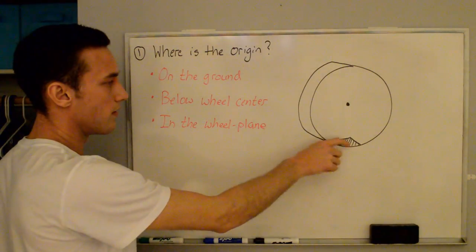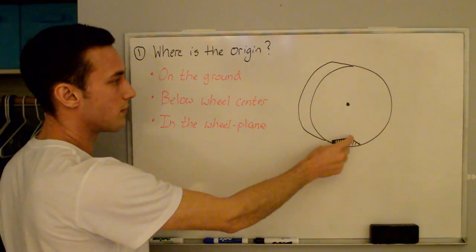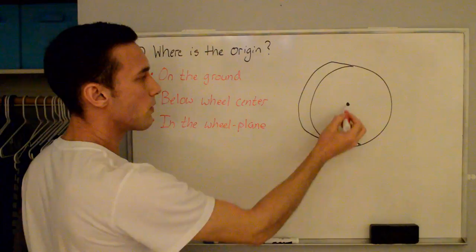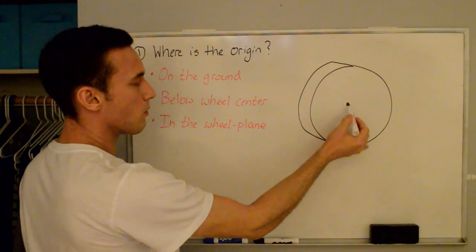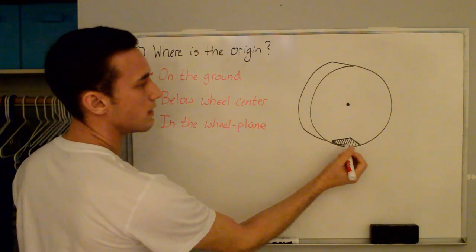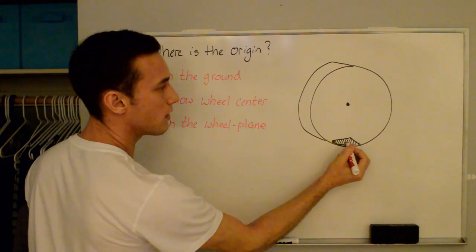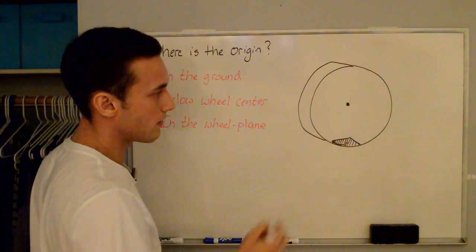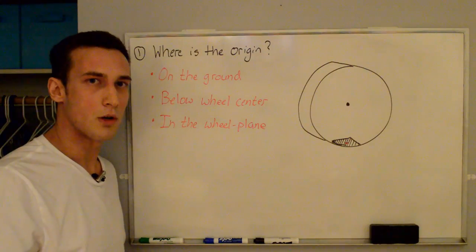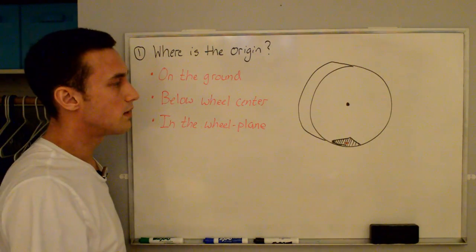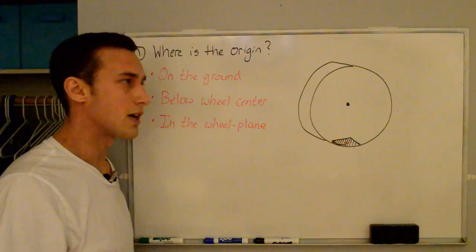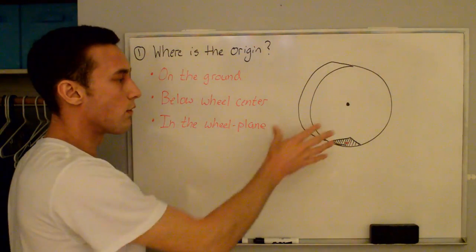So if it's on the ground, we're in the footprint of the tire — that's this dashed area. We're below the wheel center, and we're in the wheel plane. That red dot there is going to be where the origin of our coordinate system is. Now we need to define where the three axes — the X, Y, Z axes — are for this tire.